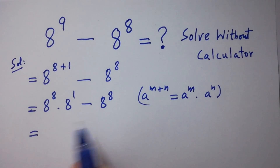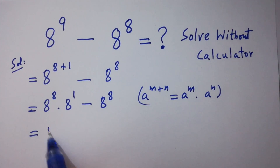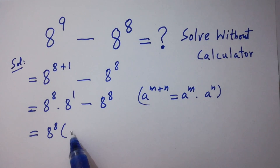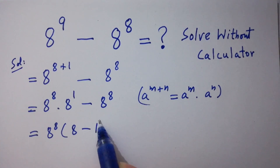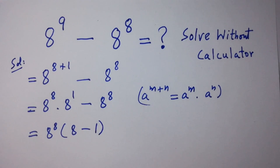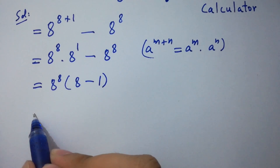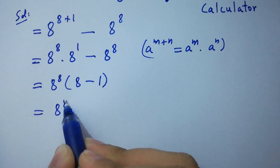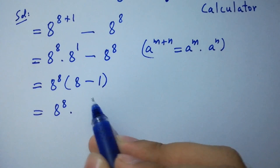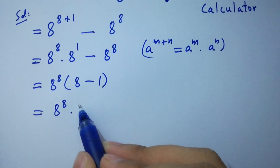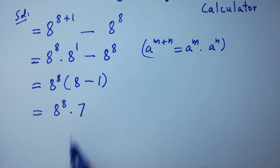Here, 8 to the power 8 can be common. We have here 8 minus 1. So 8 to the power 8 times 8 minus 1, which is 7.